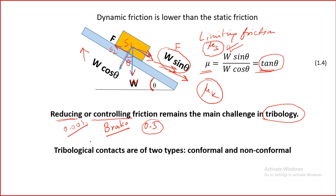About measuring friction, we will do the practical later. There is an equipment called pin-on-disc machine — it is very simple. The pin-on-disc apparatus is used for measuring friction, where you can measure both static friction as well as kinetic friction. Basically a pin is there and there is a circular disc, and the disc is made to rotate.